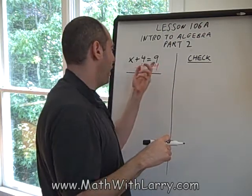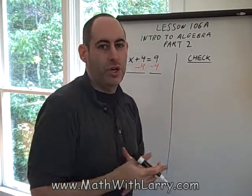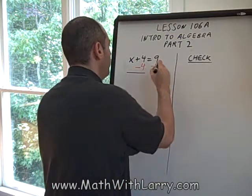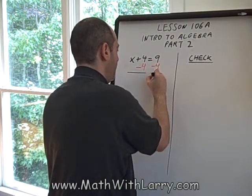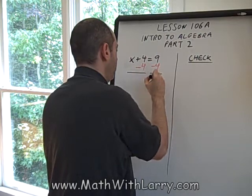I only used red just to show what I did. Don't feel as though you have to use colored pencils or colored pen or anything like that. Now, on the right, we have 9 minus 4. That's just 5. I'll bring down my equal sign.